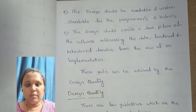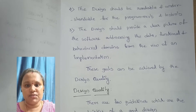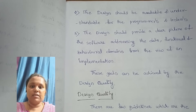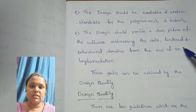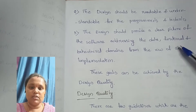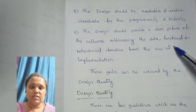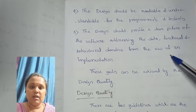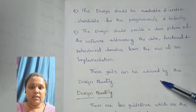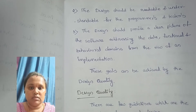The second characteristic is that the design should be readable and understandable to the programmers as well as testers. The third characteristic is that the design should represent a clear picture of the software — meaning it should address the data, the functional behavior, and the implementation of the software. These are the three important characteristics of the design process.